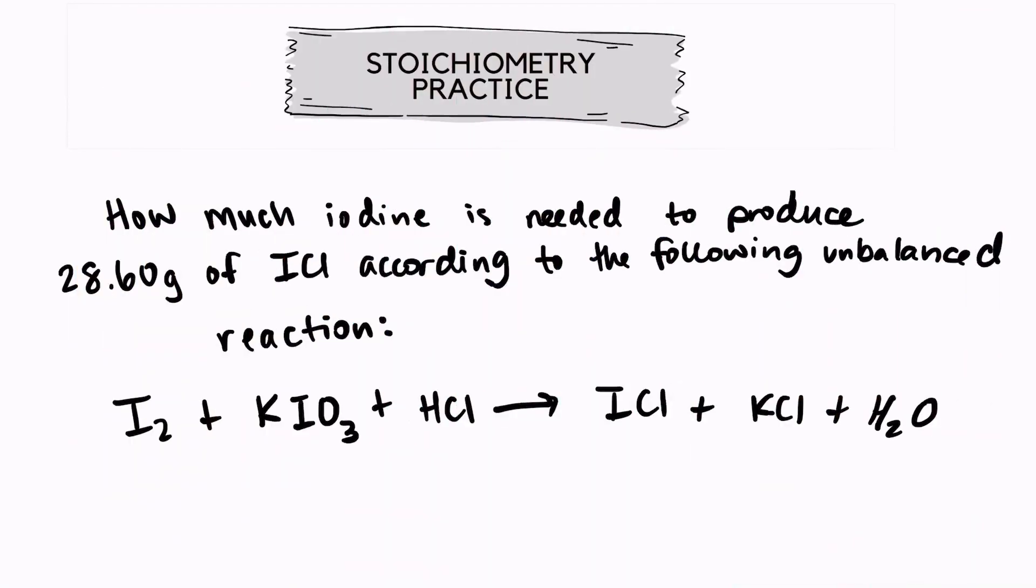Hi, welcome back. We're going to take a look at a more advanced stoichiometric problem. So the question says, how much iodine is needed to produce 28.6 grams of iodine chloride according to the following unbalanced reaction?